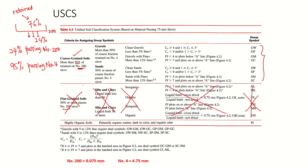Moving to the second column, we identify whether the soil is gravel or sand by referring to sieve number 4. From the particle size distribution, sieve number 4 passing is 95%, which means only 5% is retained on number 4. For gravel, more than 50% of the coarse fraction must be retained on number 4 — but we only have 5%, so it does not fulfill gravel criteria. We cross that out.